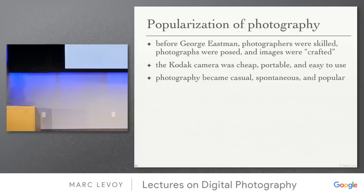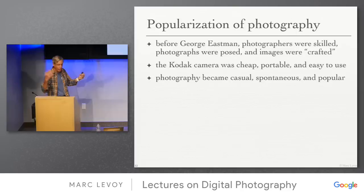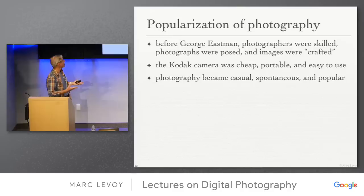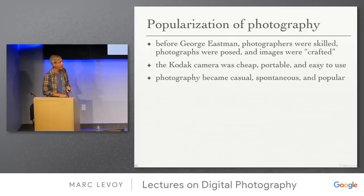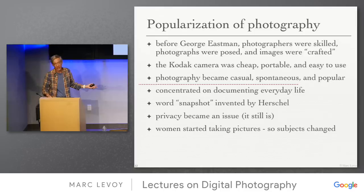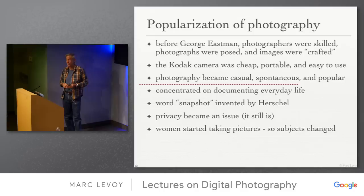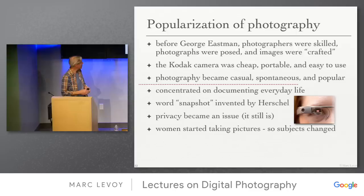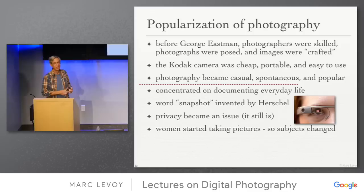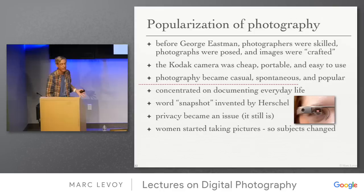These technological developments led to the popularization of photography. Before, photographers had to be craftsmen and it took a long time to make a picture. The Kodak camera changed all that — photography became casual, spontaneous, and popular. You could concentrate on everyday life, take candid shots. The word 'snapshot' was actually invented by Herschel, the same person who invented the word 'photography.' Privacy became an issue — it still is — and women started taking pictures, which changed the subjects.